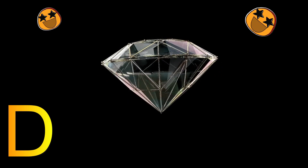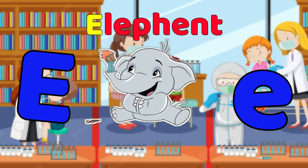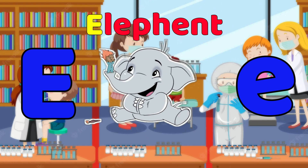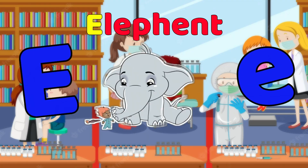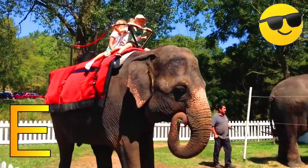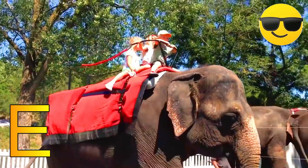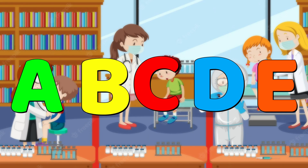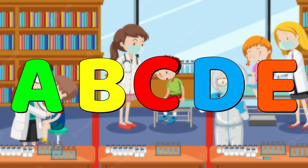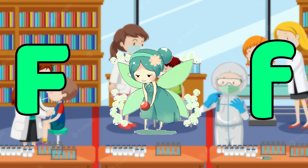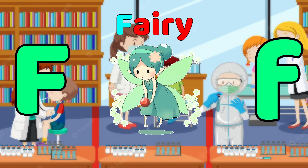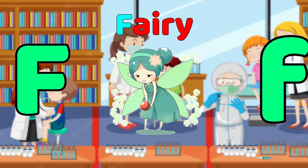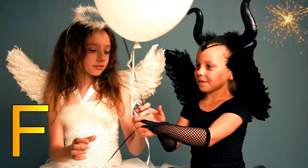E is for Elephant. E, elephant, E, elephant. F is for Fairy. F, fairy, F, fairy.